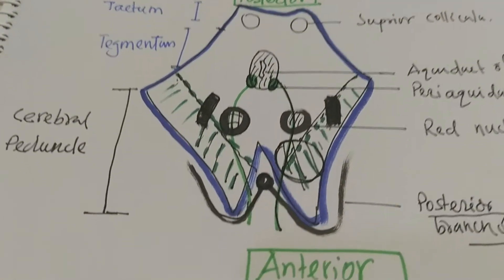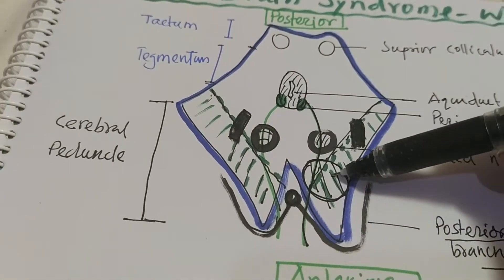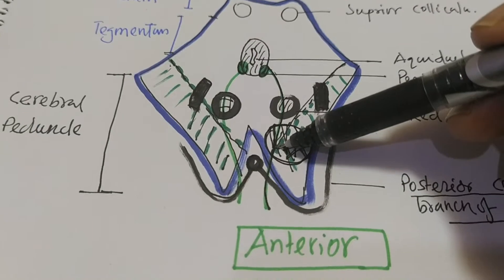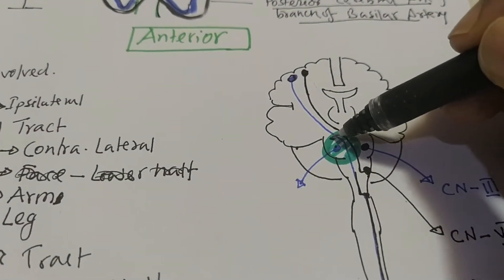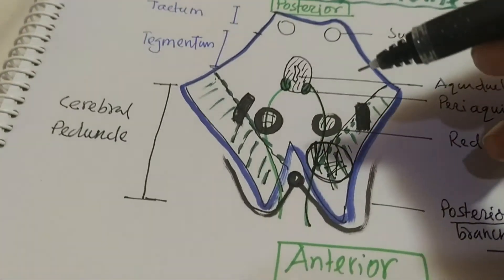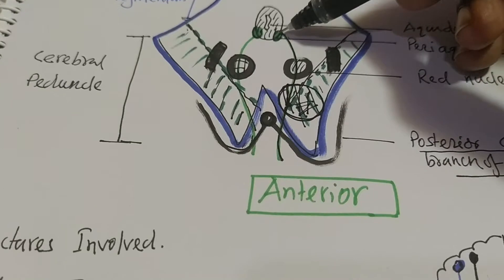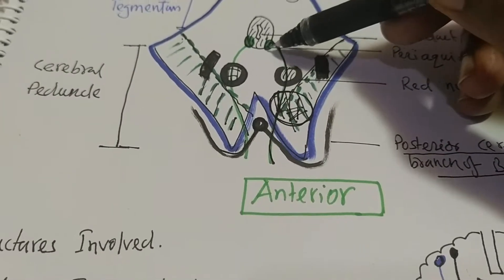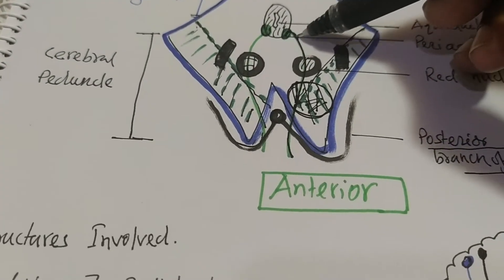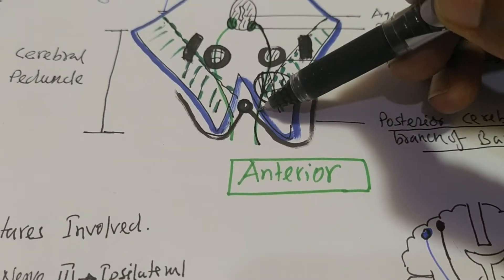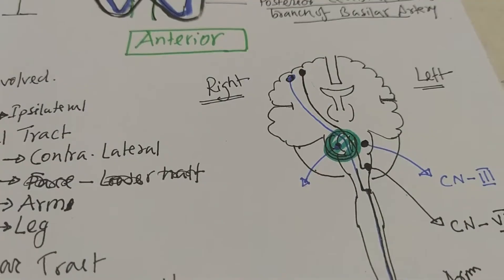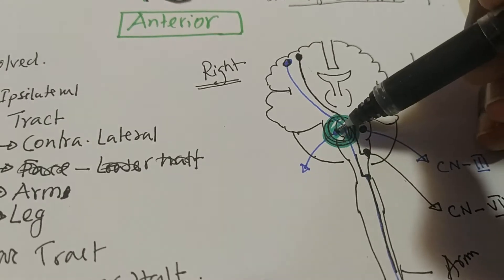Now look at the first image. If there is any lesion — whether a stroke, vascular lesion, abscess, or neoplastic lesion — in the midbrain, the structures involved must be identified carefully. The third cranial nerve nucleus is located at the level of the superior colliculus of the midbrain. So the third cranial nerve nucleus and its fibers are involved — specifically, the third cranial nerve nucleus on the right side is involved.